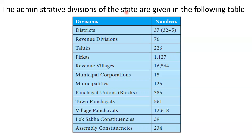The administrative divisions of the state are as follows: 38 districts, 76 revenue divisions, 226 talukas, 1,127 firkas, 16,564 revenue villages, 15 municipal corporations, 125 municipalities, 385 panchayat unions, 561 town panchayats, 12,618 village panchayats, 39 Lok Sabha constituencies, and 234 assembly constituencies.